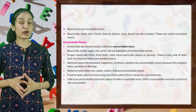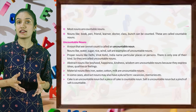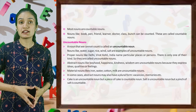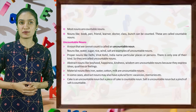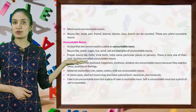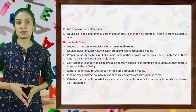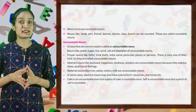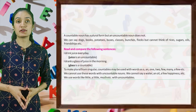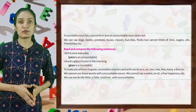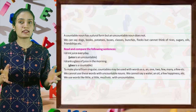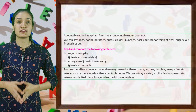Abstract nouns like boyhood, happiness, kindness, wisdom are uncountable nouns because they express ideas, qualities or feelings. Material nouns like iron, water, cotton, milk are uncountable nouns. In some cases, abstract nouns may also have plural forms — vacancies, memories, etc. Cake is an uncountable noun, but a piece of cake is a countable noun. Salt is an uncountable noun, but a pinch of salt is a countable noun. So kids, a countable noun has a plural form but an uncountable noun does not. We can say dogs, books, potatoes, buses, glasses, bunches, flocks — but cannot make plurals of rice, sugar, oil, friendship, etc.